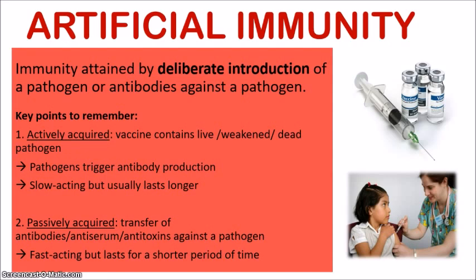Now let's look at artificial immunity. This is immunity attained by the deliberate introduction of a pathogen or antibodies against a pathogen. Unlike natural immunity, the body is not making its own antibodies naturally on its own — you have to deliberately introduce the pathogen or antibodies, usually by vaccine or injection. Similar to natural immunity, artificial immunity can also be either actively or passively acquired.